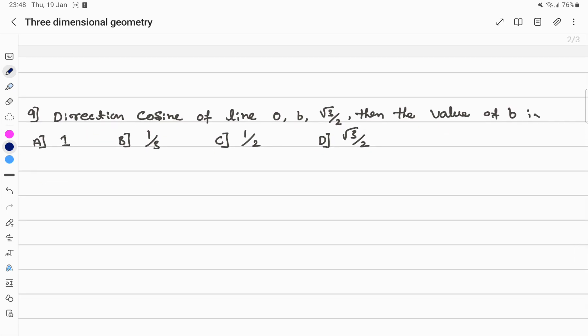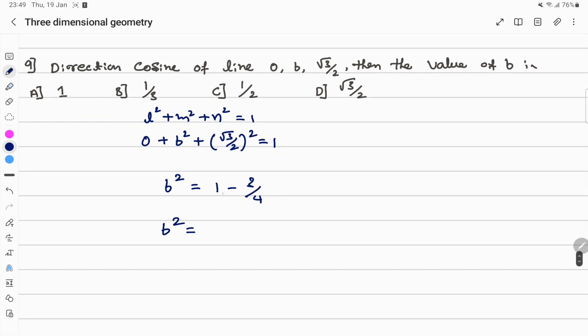Direction cosines of a line are 0, b, root 3 by 2. Then what's the value of b? Same formula: L square plus m square plus n square equals 1. L is 0. m square is b square. n square is root 3 by 2 whole square which equals 1. Then b square equals 1 minus root 3 whole square which is 3 by 4. That is, b square equals 1 minus 3 by 4, which is 1 by 4. Then b equals plus or minus 1 by 2. Here we have positive. Option C is the answer. Thank you.